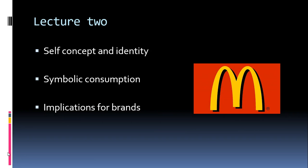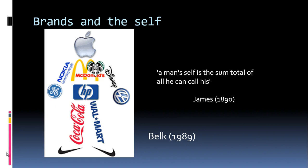We started by thinking about how brands relate to the self. Belk's theory — Russell Belk, published in the Journal of Consumer Research — is around possessions and the extended self. His idea is that we extend who we are through the things we own, as captured in William James's quote: 'a man's self is the sum total of all he can call his.' Essentially, we only buy or consume products consistent with our self-concept.